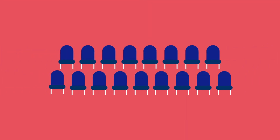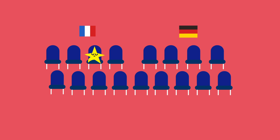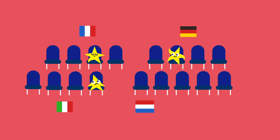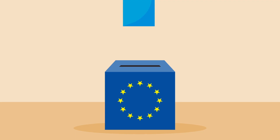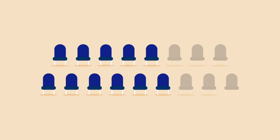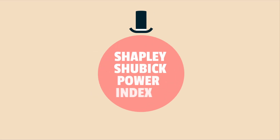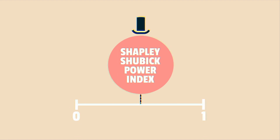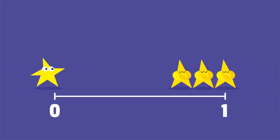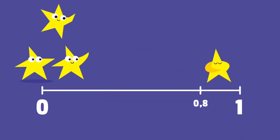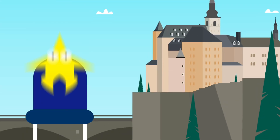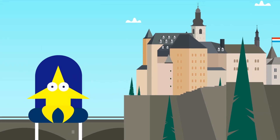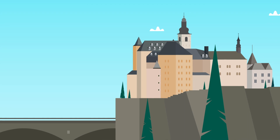Their seats were distributed as follows: France four, Germany four, Italy four, Netherlands two, Belgium two, Luxembourg one. And every initiative needs two-thirds of the seats to pass. The so-called Shapley-Shubik power index varies between zero and one. It is equal to zero if there is no possibility for a player to change a minority into a majority, and is bigger as a player has multiple possibilities to have an impact on a decision. In this case, Luxembourg's Shapley-Shubik index is zero, meaning it has no power.